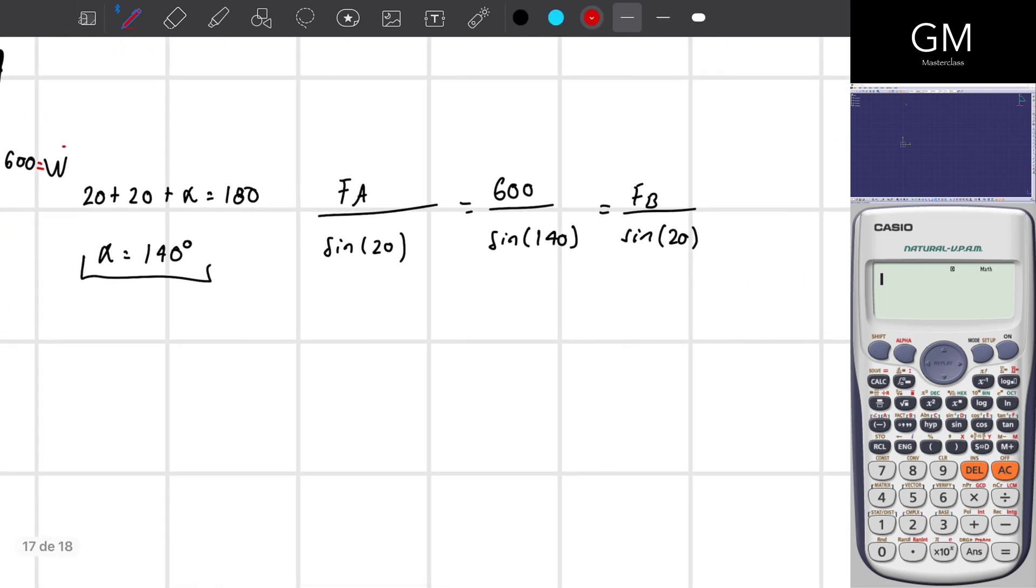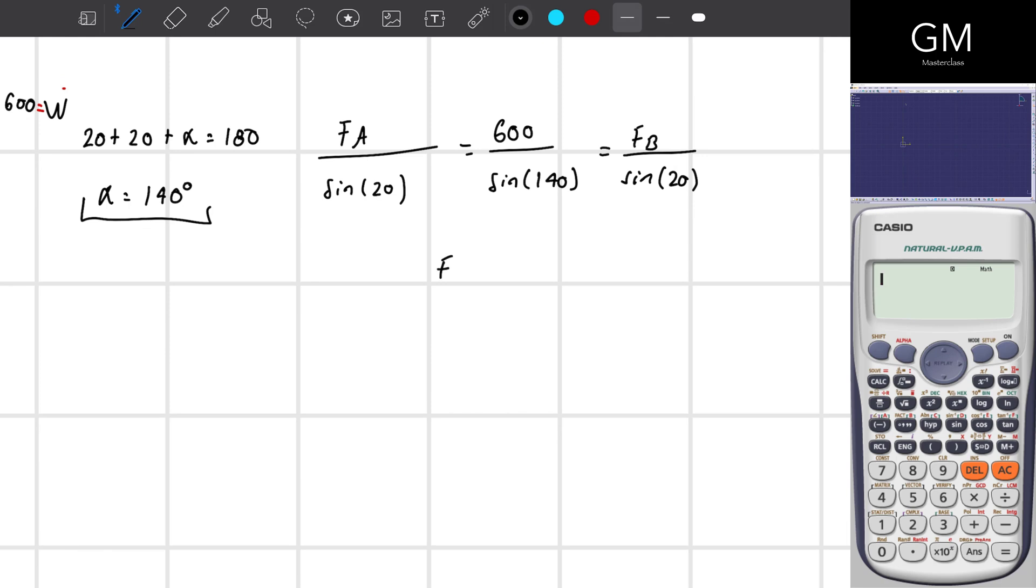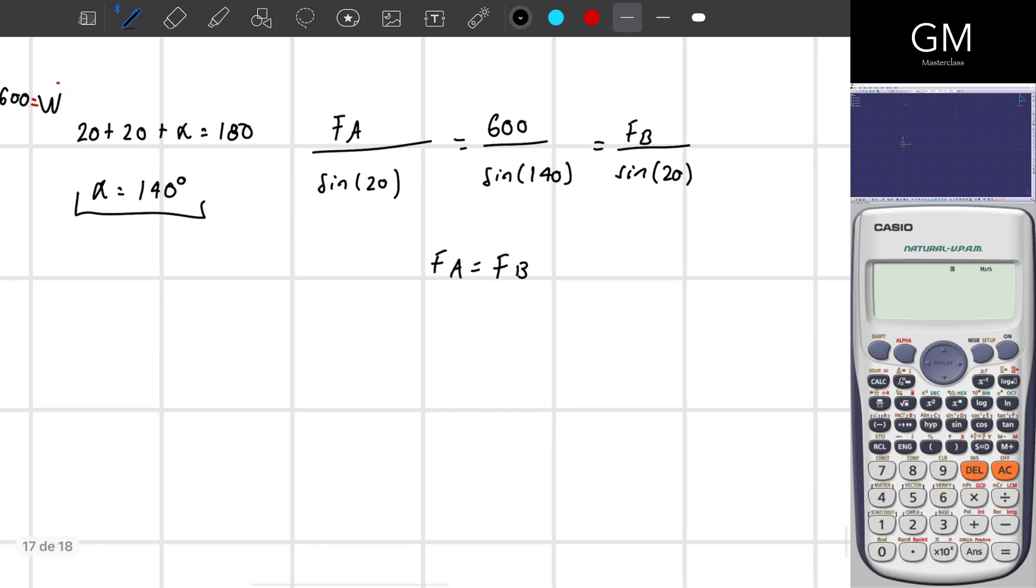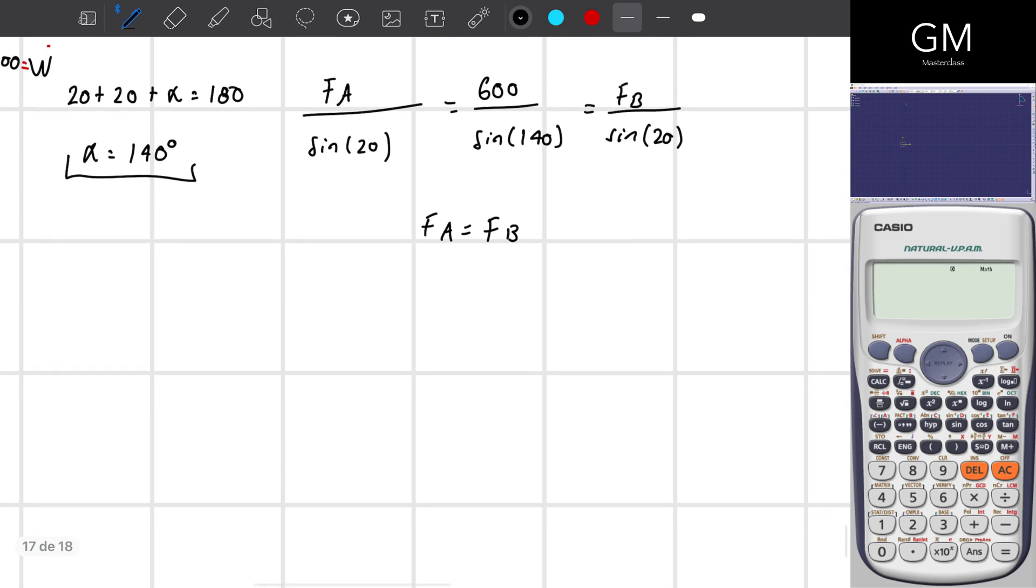So what I can assume taking into account this equation is that F_A and F_B are equal. So I just have to find F_A. In this case, I'm going to look for F_A. Because F_A is equal to 600 divided by the sine of 140 multiplied by the sine of 20.